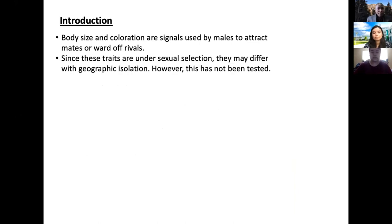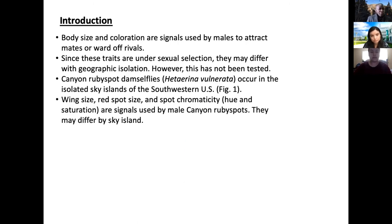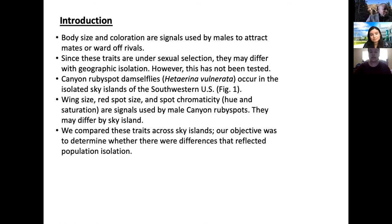The reason this research is so important is because canyon ruby spots are aquatic organisms, and with the climate changing we're looking at sexual selection rather than just other selections. The males have big, vibrant red spots on their wings and the females have orange on their wings. Wing size, red spot size, and spot chromaticity — hue and saturation — are the main focus of the research for the males, to see if they truly use their spots for sexual selection. We compared these traits across sky islands, and our objective was to determine whether there were differences that reflected population isolation. We expect that traits under survival selection, like wing size and shape, do not differ across sites, and we expect traits under sexual selection, like wing spot and color, to differ across sites.